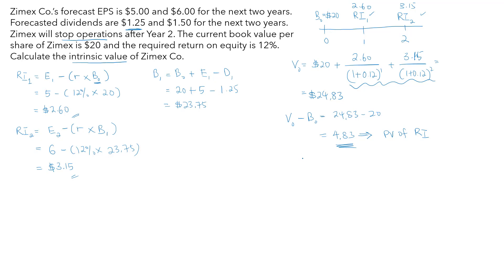Another way to express this is the intrinsic value over book value: $24.83 / $20 = 1.24. This is the justified price-to-book multiple. When the justified price-to-book ratio is greater than one, it indicates potential growth or value added in the company.